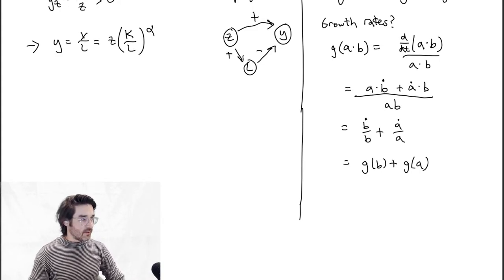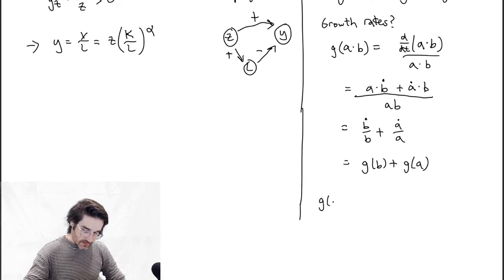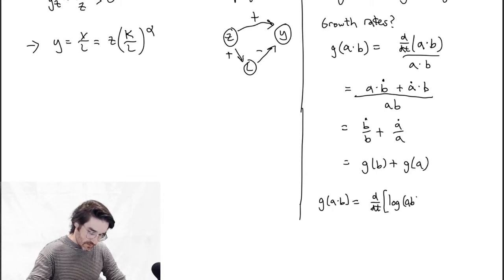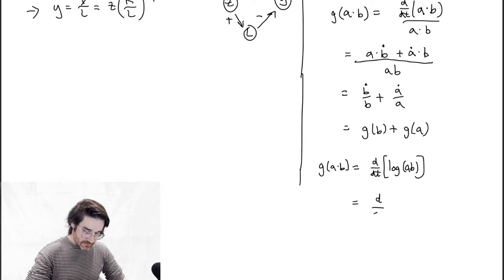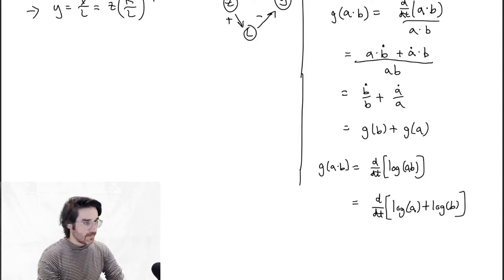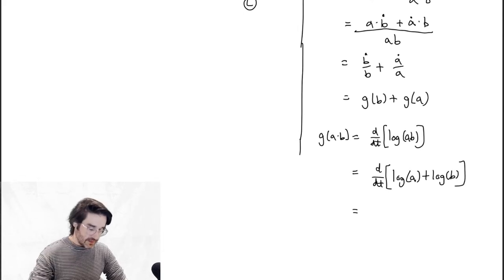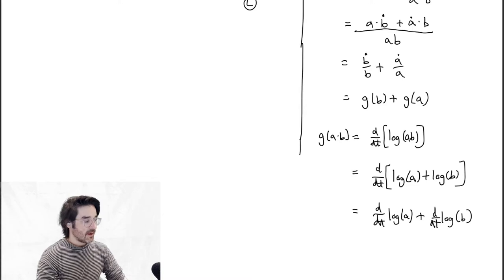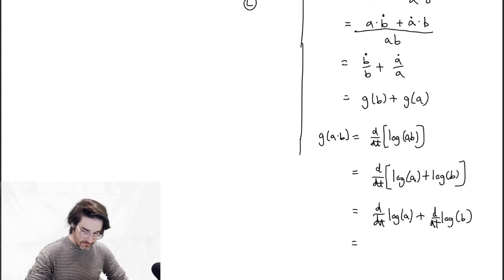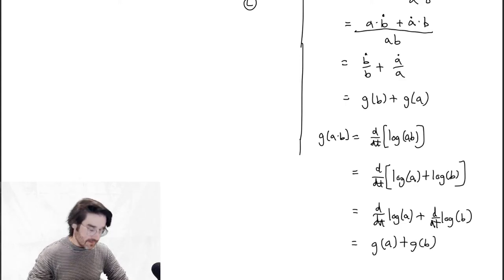The other way to prove it is with logarithms. G(A times B) equals d/dt of log(A times B) — because the growth rate is always the derivative of the logarithm. By the log product rule, log(A times B) equals log A plus log B. Since the derivative is linear you can distribute: d/dt log A plus d/dt log B equals G(A) plus G(B). You can prove it either way.